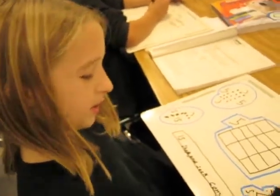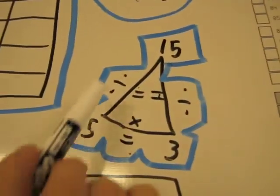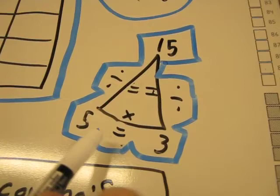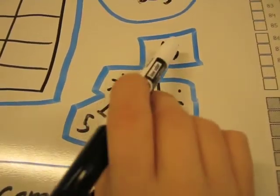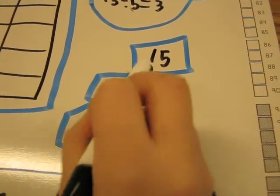This is my equation, and like Ms. Haas taught us. Five divided by fifteen, oh no, wait, five times three equals fifteen, and three times five equals fifteen.